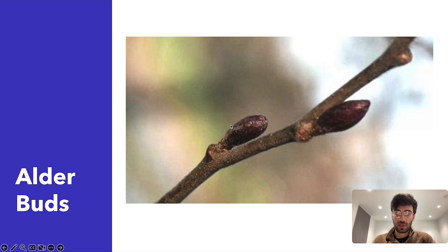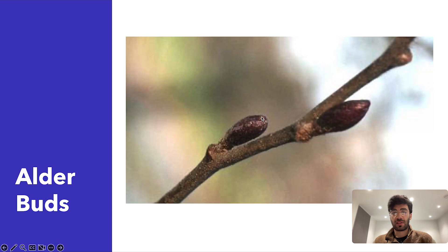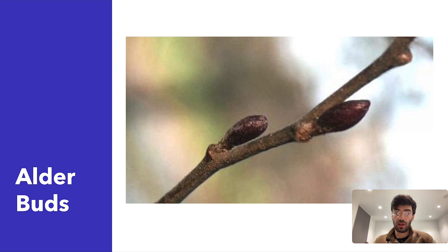The buds of the alder — as a beginner I can't pick out many features, but they are described as alternating buds, which means there's one here and then one further along, as opposed to opposite buds where two grow next to each other. We'll come across opposite buds in some other species. Alder has alternating buds, which means alternating leaves — that's a good way of identifying the alder tree.